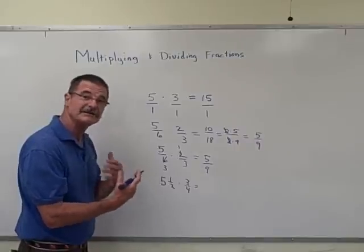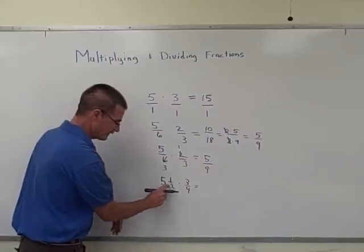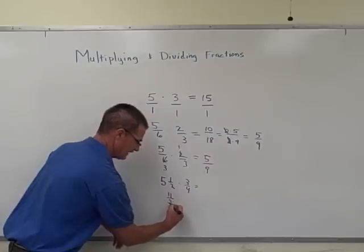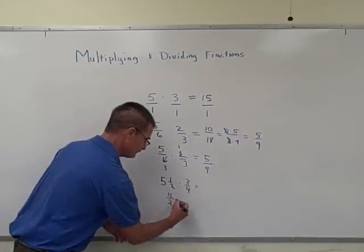We need to take this and turn it into what's called an improper fraction. And we do that by going 2 times 5 is 10 plus 1, which is really 11 halves. And 11 halves, of course, is the same thing as 5 and 1 half.